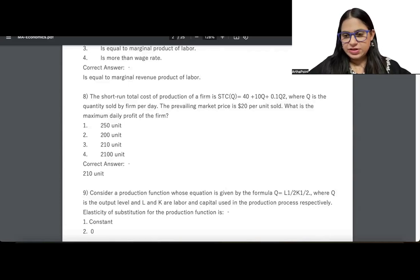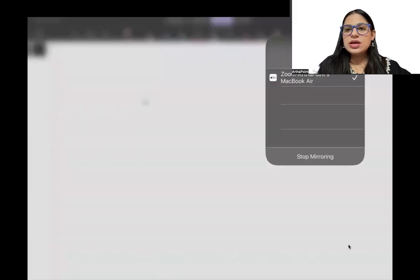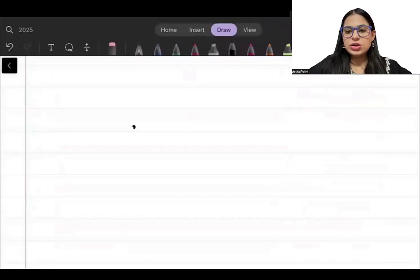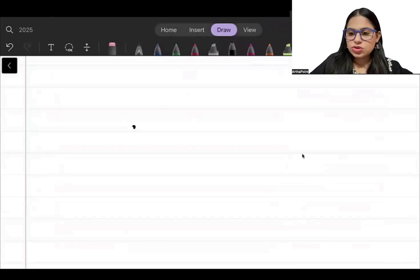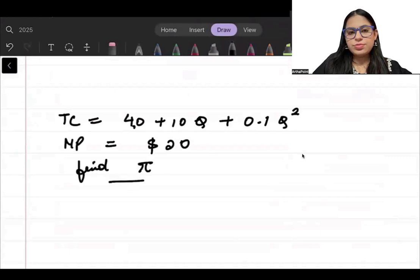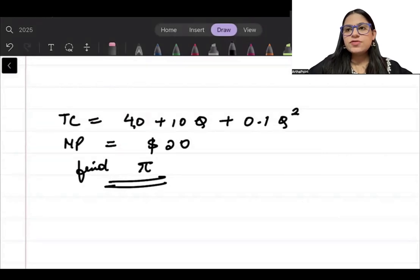The questions are not very difficult. The only thing you have to make sure is that you are well clear with your basics. If you are clear with the basics, you will be able to solve it. For example, this question says the total cost is given to you as 40 plus 10Q plus 0.1Q squared. The market price is $20, and they are asking you to find out the quantity. It is very simple.